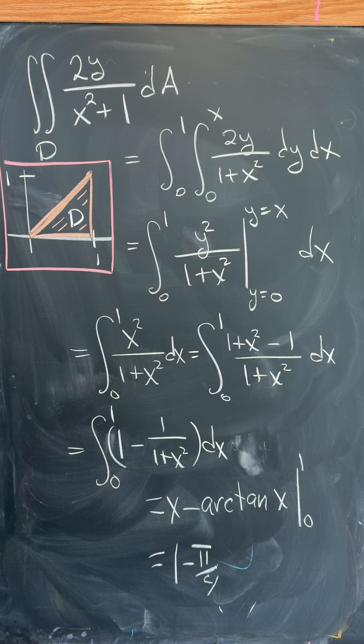Integrating out with respect to y first will give us y squared over 1 plus x squared evaluated from 0 to x inside of that x integral.